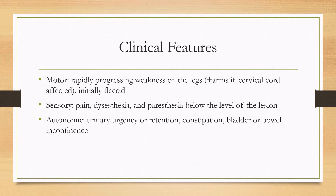The clinical features depend on the level of the spinal cord affected. For example, if you have a thoracic cord lesion you might only have weakness of the legs, but if you have a cervical lesion you might have weakness of the arms. One of the main features is rapidly progressing weakness of the legs, and this is usually flaccid although it can become spastic later in the disease.